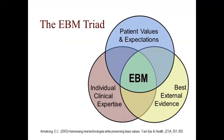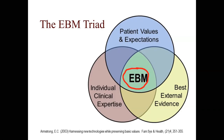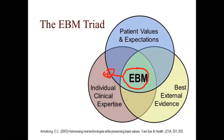Here's the EBM triad — evidence-based medicine. It involves patient values and expectations, best external evidence, and clinical expertise. There has to be a blend of all three — a perfect Venn diagram where we want to fall right in the middle. Which way do we tend to trend in physical therapy? I think we fall over toward relying too much on our individual clinical expertise and are not willing to look at the research.